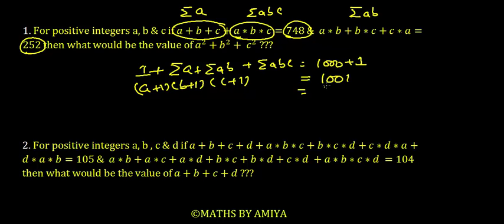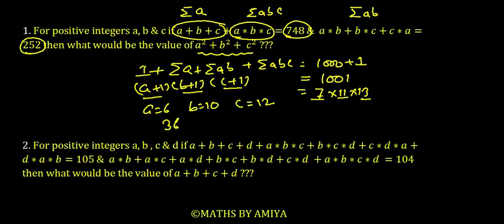Now we need to factorize 1001, which is 7 × 11 × 13. Since we have (A+1), (B+1), (C+1), we can take any value as A+1, another as B+1, another as C+1, because we're not considering ordered pairs in summation. So take A+1 is 7, A becomes 6. B+1 is 11, B becomes 10. C+1 is 13, C becomes 12. And we need A² + B² + C², which is 36 + 100 + 144, which is 280. So our answer is 280.